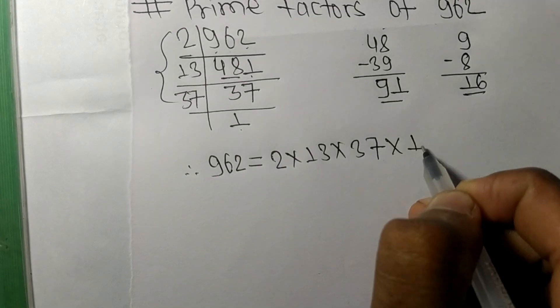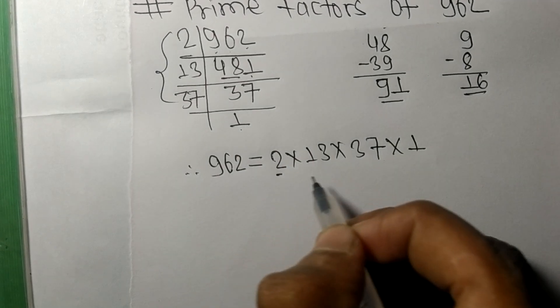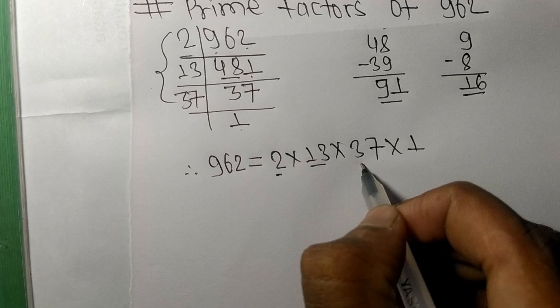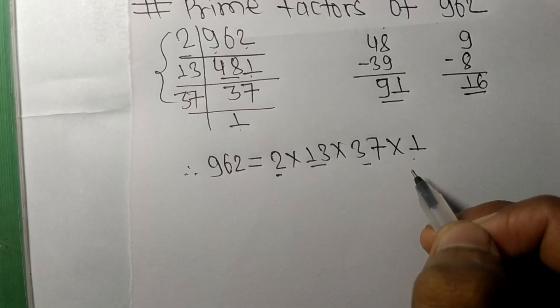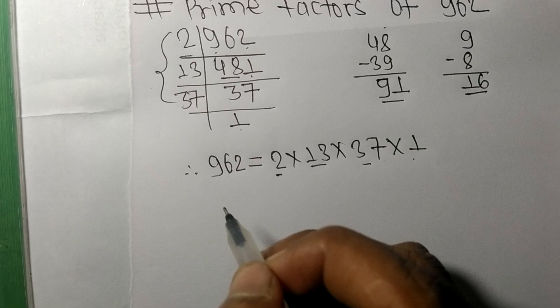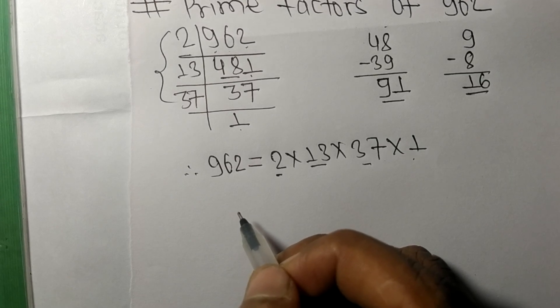So 2, 13, 37, and 1 are the prime factors of 962.